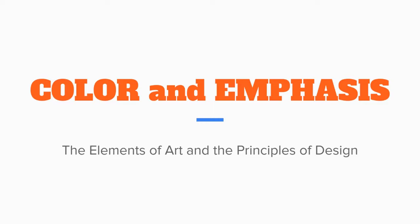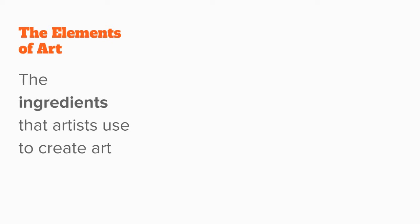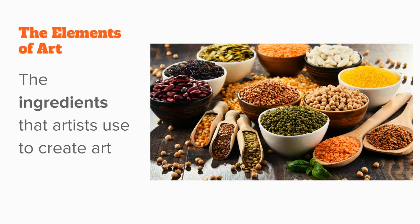First, a reminder that color is one of the seven elements of art. Elements of art are the ingredients that an artist can use when creating their artwork. Just like a chef combines several different ingredients into their finished dish to create something delicious, artists use different elements like line, shape, and color to create their finished, hopefully well-rounded looking work of art.